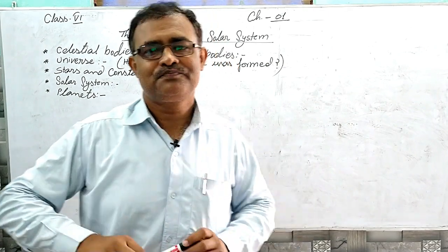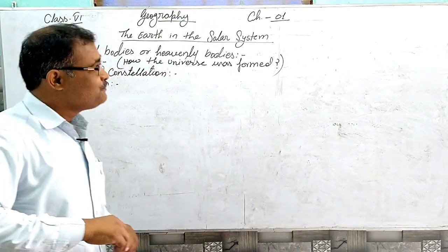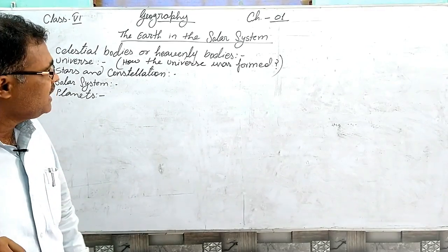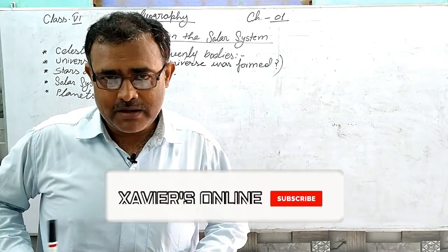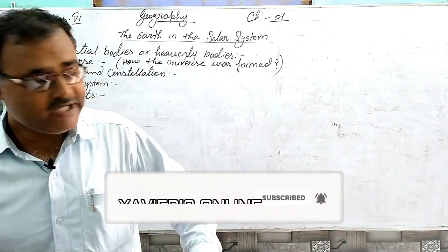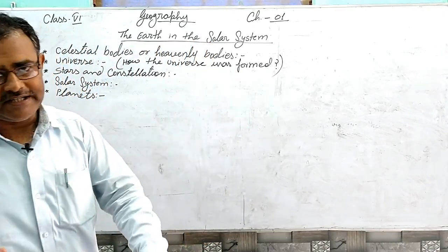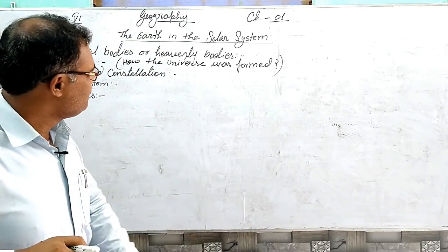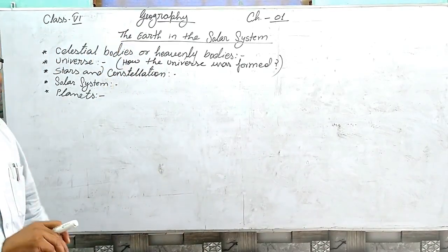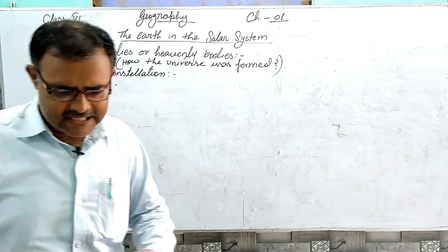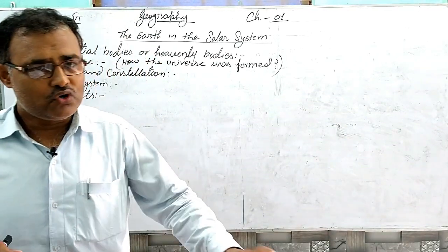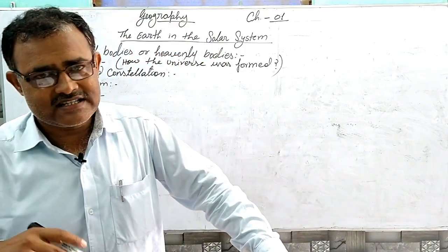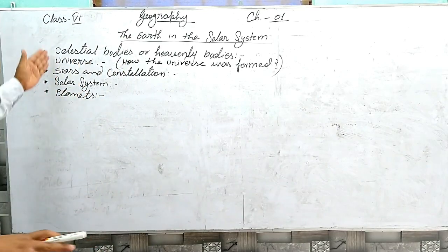Very good morning students. Today we will study Class 6 Geography. Our first chapter is 'The Earth in the Solar System.' It is an important chapter for you. In this chapter, we will learn about the universe, what is the Solar System, and we will learn about the stars and constellations.